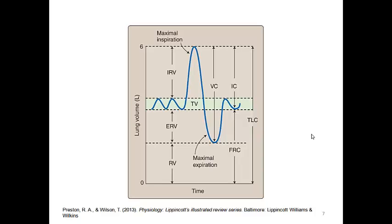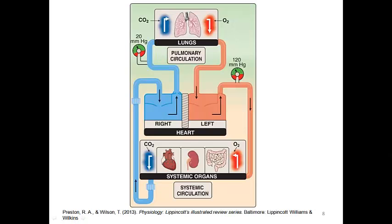We took a deep breath in and then expired as hard as we could, so vital capacity is really equivalent to FVC in this diagram. There is also forced expiratory volume, or FEV1, which is the volume of air that can be forcibly expired in one second following a maximal inspiration. FEV1 is probably the most important clinical measure of lung function, though we won't cover it in more detail right now.